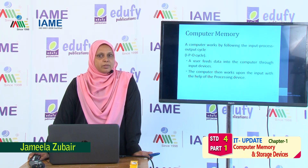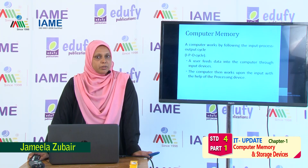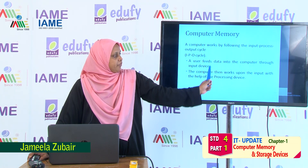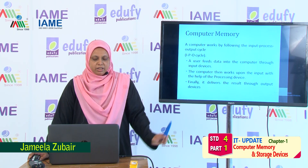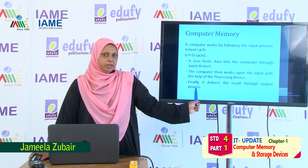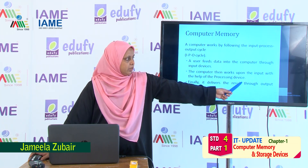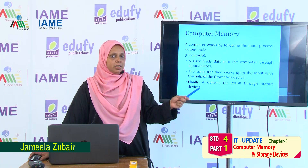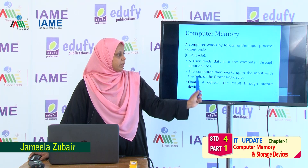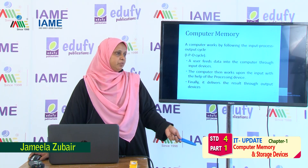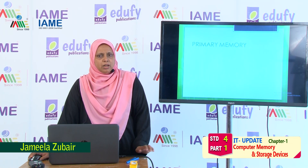Then what happens next? The second step is processing. The computer works upon the input with the help of the processing device. Finally, it declares the result by using the output devices. So the three things a computer does are: input, processing, and output. Input is done using input devices, processing using the processing device, and the result is produced using the output devices.